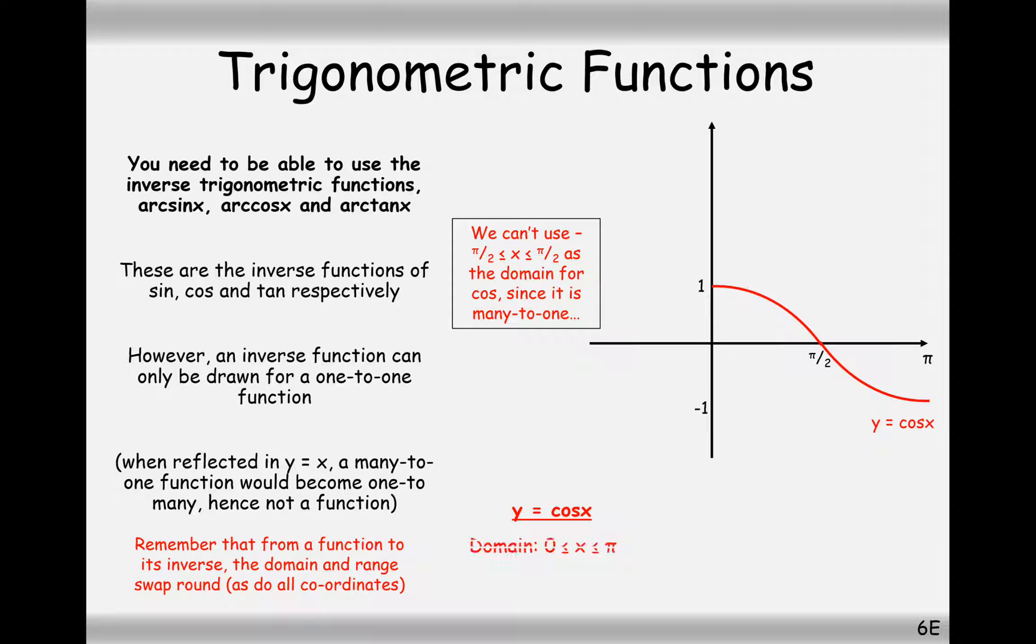So now what we do is we draw in the dotted line of y equals x and reflect it in that line. So 1 comes down to here, pi by 2 goes up to there, and pi down here will come up to here at the coordinate minus 1. So it's all reflected in that line there. So the blue graph here is the graph for y equals arc cos x.